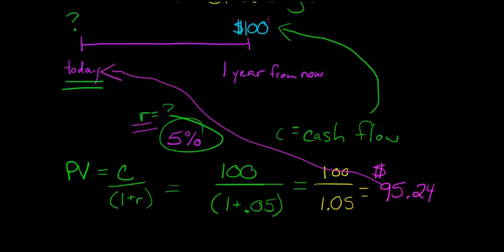When we think about this $100 a year from now and we say there's a time value to money — $100 a year from now isn't worth the same as $100 today — we ask: what is $100 a year from now worth today? Well, it's worth $95.24, because that's the amount we would have to invest today at 5% interest in order to get $100 a year from now.